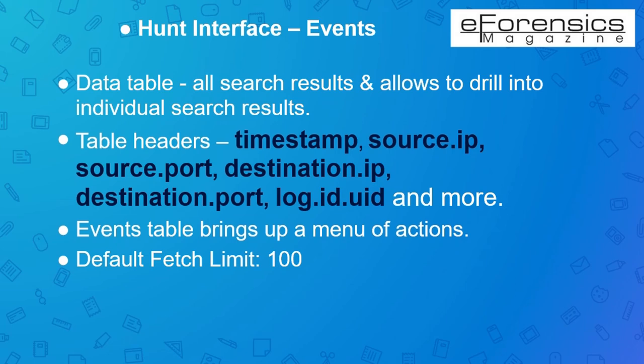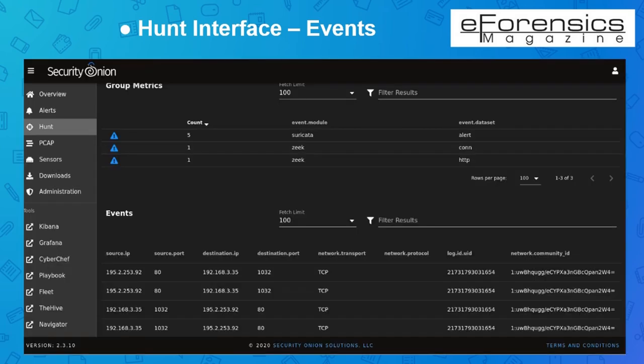In SOC, the default fetch limit setting for the events table is set to 100. There is an icon that helps you pivot to the PCAP file for the streaming information. The bell icon generates an alert for the event. Once you expand the search of a specific value or event displayed on the group metrics table, you can find several pieces of information. For a Zeek log, you can find information such as http.method, http.url, message, log.offset, log.id.uid, and more.